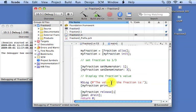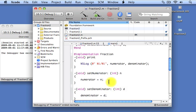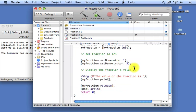We then call the print method. The print method gets executed here, which simply takes the value of our two instance variables, numerator and denominator, and passes them along to NSLog to be displayed.